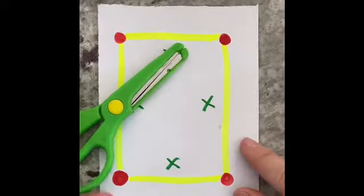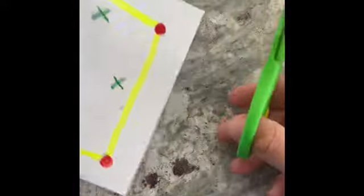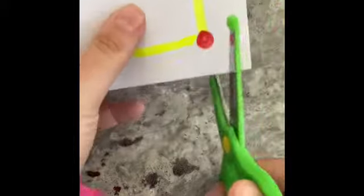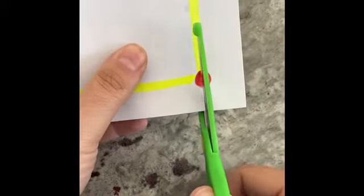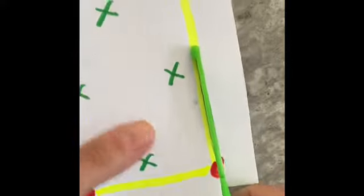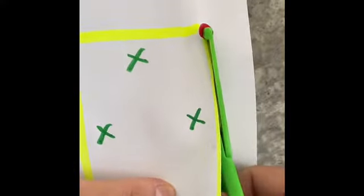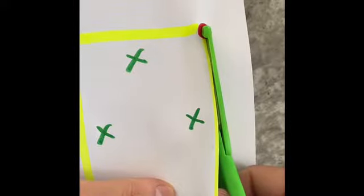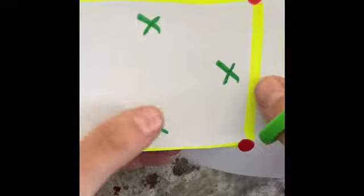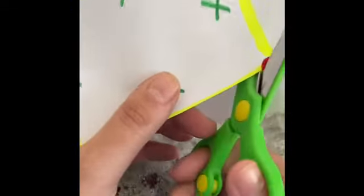Now the kids are ready. They need scissors and this piece of paper. Put the scissors in their writing hand, pink thumb on the X. They're going to cut and when they reach the first red bubble, stop, turn the paper, finger on green, and now they're ready to go.